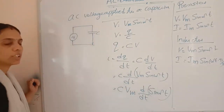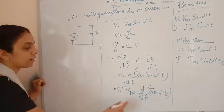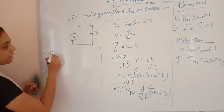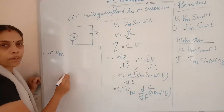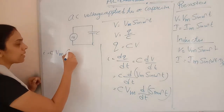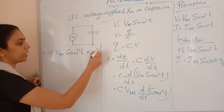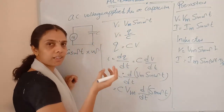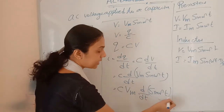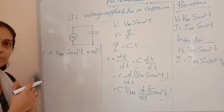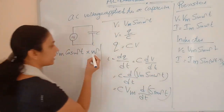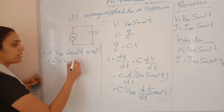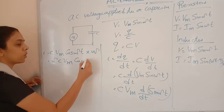The differential of sin(ωt) is cos(ωt) times ω, since we differentiate sin θ to get cos θ, and then differentiate ωt with respect to time to get ω. So the final answer is I equals ωC Vm cos(ωt).